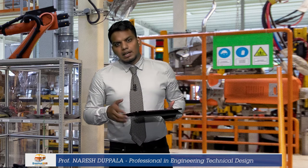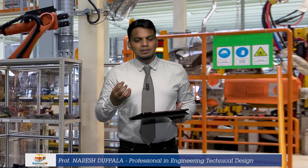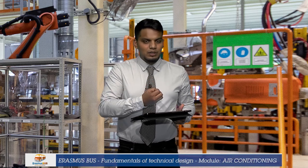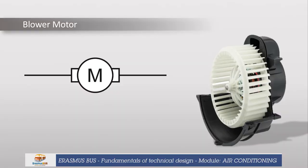A blower motor is a fan which will be located next to each evaporator and condenser. Normally, a motor fan is represented with the letter M inside a circle, with two terminals connected to it for the supply. The two small boxes next to the circle represent brushes. If it's a brushless fan, these will not be present in the symbol; if it's a brushed fan, the two small boxes will appear. The symbol we are currently using is for a brushed motor fan.